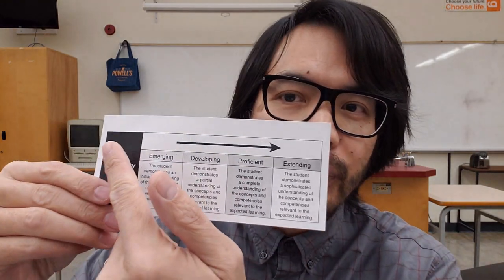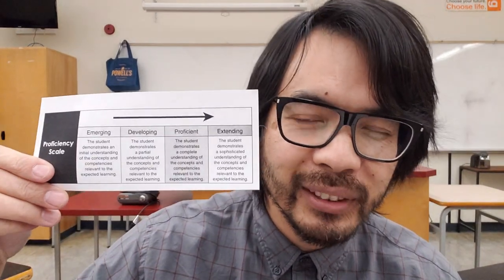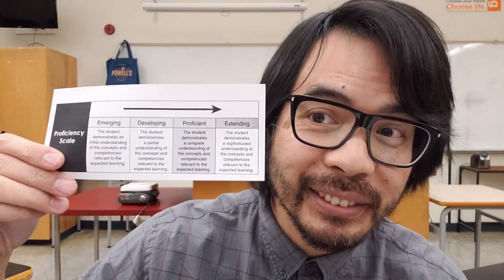Second, science report cards for students up to and including grade nine are moving away from providing letter grades and percentages. Instead, an arrow will now show how proficient a student is at a standard.